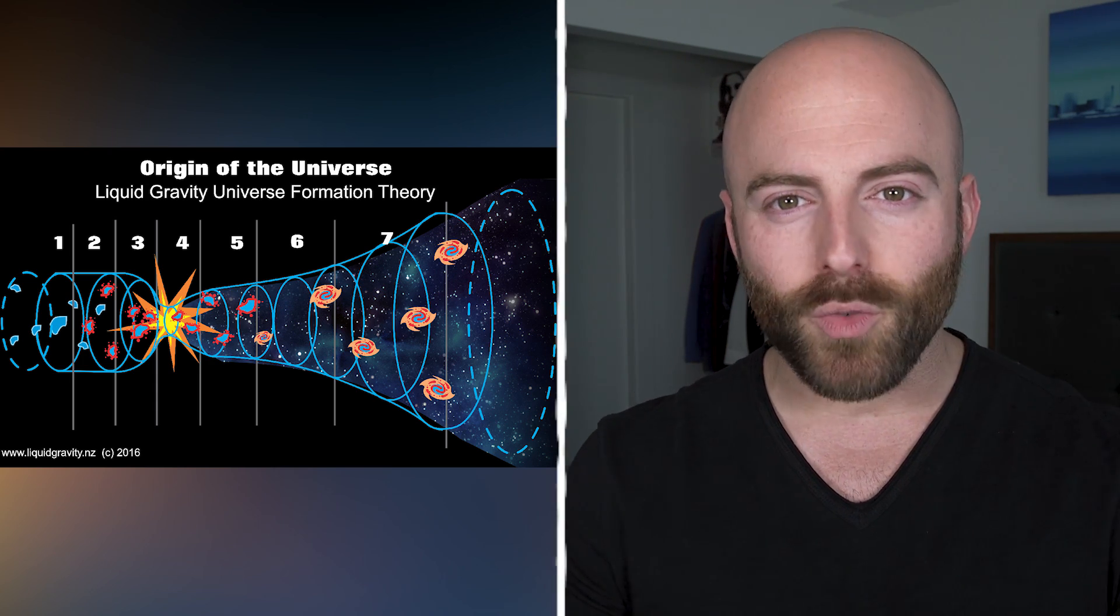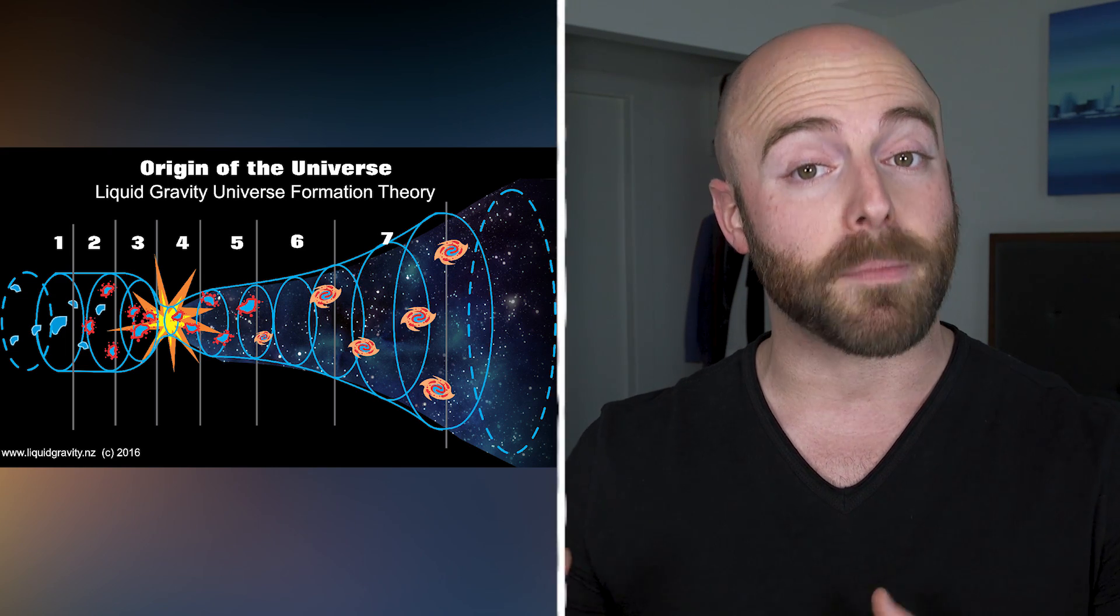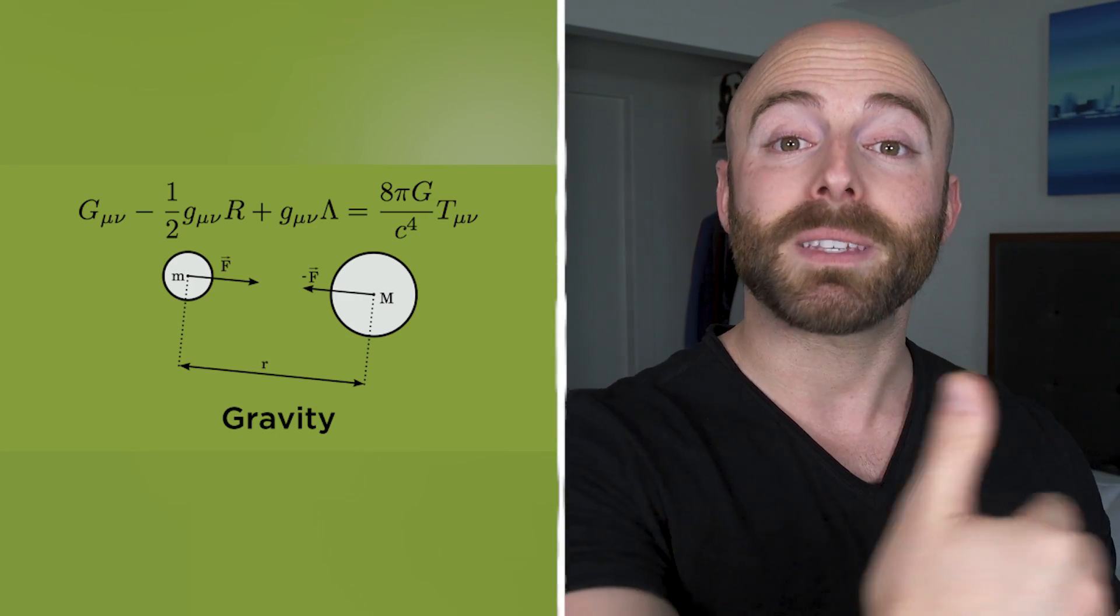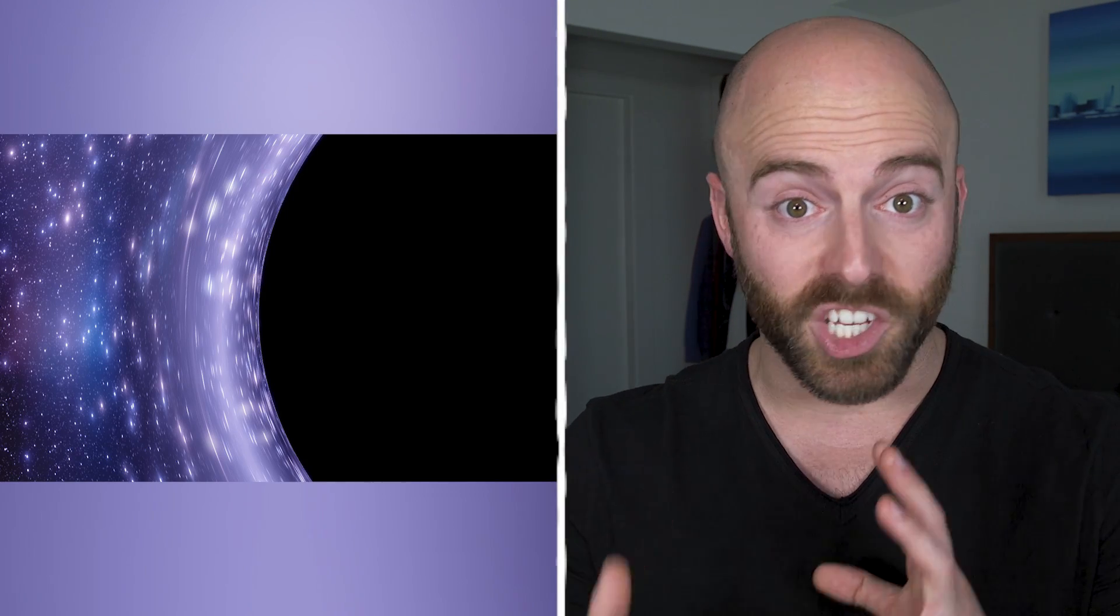Some have speculated that the reason gravity is so weak is that it doesn't originate in the three spatial dimensions that we live in. It's possible that gravity comes from another dimension. Then, this force seeps into our universe in a diluted form, explaining why it's so weak. But, inside a black hole where space-time is so contorted, you might encounter glimpses into another dimension.